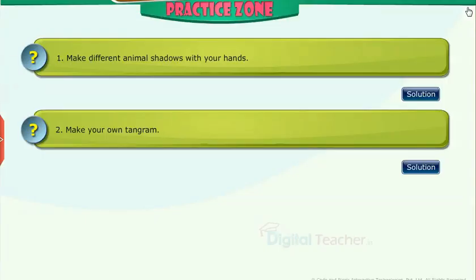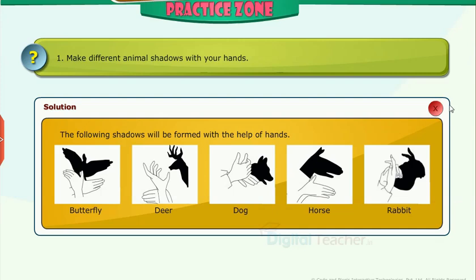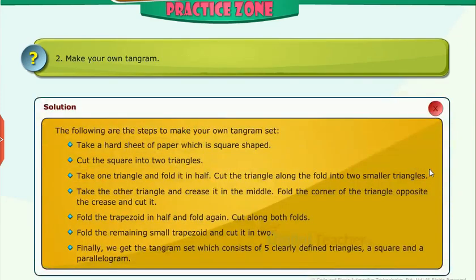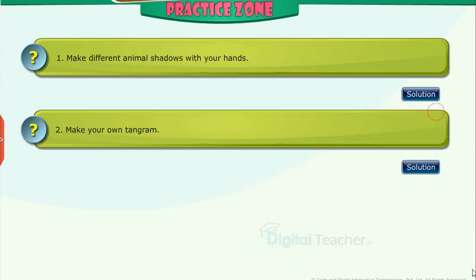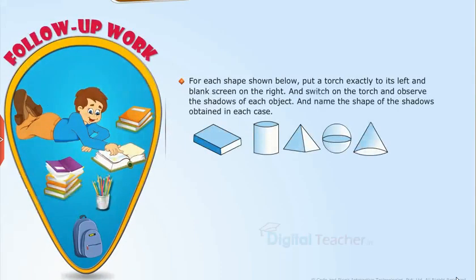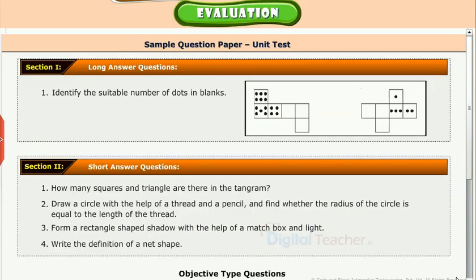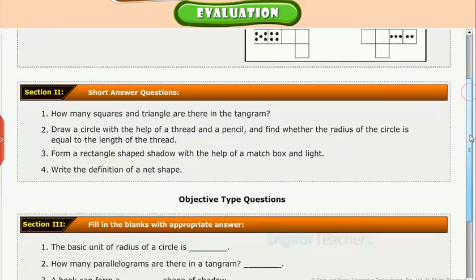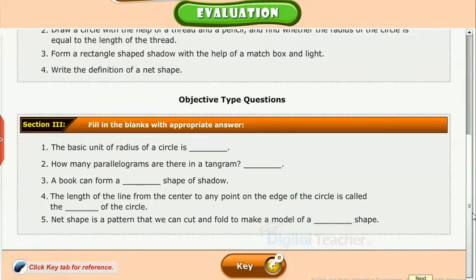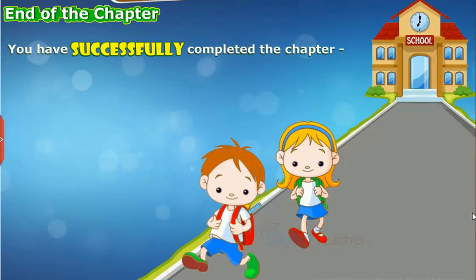Practice: Try to solve the questions on your own. Click solution tab to verify your answer. Follow-up work: For each shape shown below, put a torch exactly to its left and a blank screen on the right, and switch on the torch and observe the shadows of each object and name the shape of the shadows obtained in each case. Evaluation: Test your understanding of the chapter by taking the mock unit test. You have successfully completed the chapter playing with shapes.